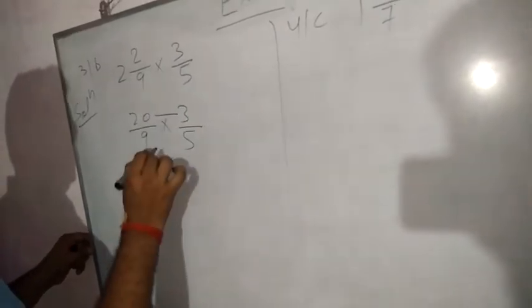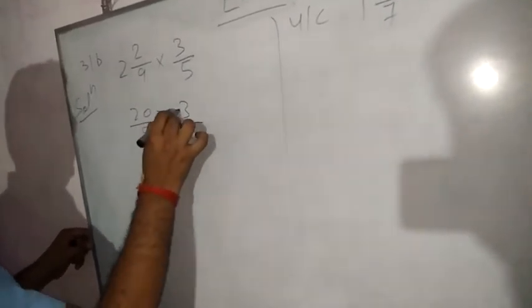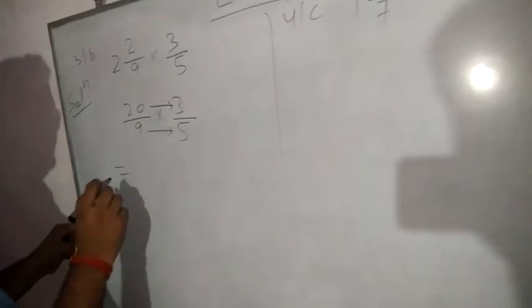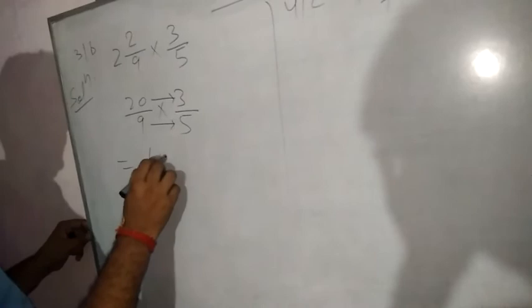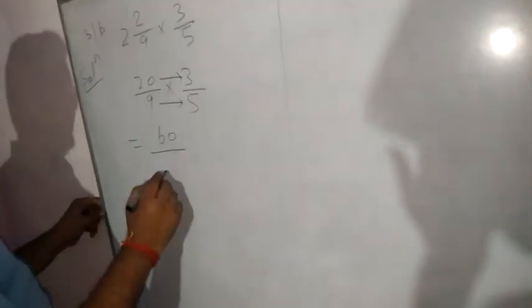Multiply numerator to numerator and denominator to denominator. So 20 into 3, that means 60, and 9 into 5, that means 45.